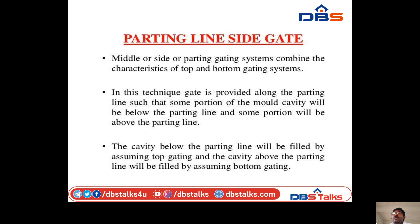Parting line gate: the parting or side gate system combines the characteristics of top gate and bottom gate systems. The gate is provided along the parting line such that some portion of the mold cavity is below the parting line and some portion is above it. The cavity below the parting line is filled as in a top gate, and the cavity above the parting line is filled as in a bottom gate.